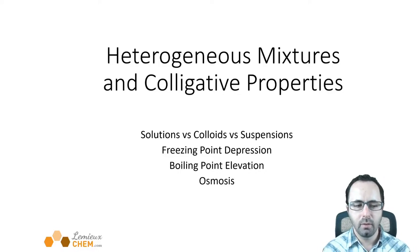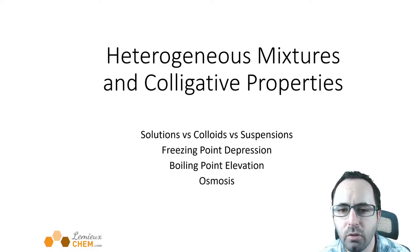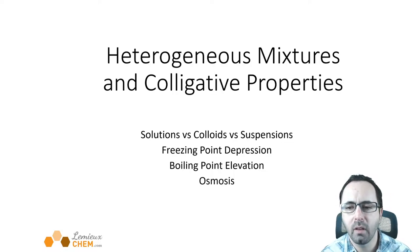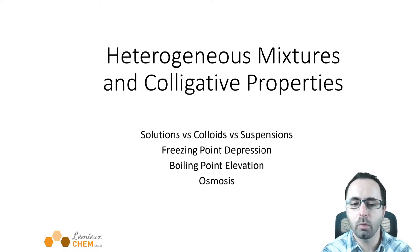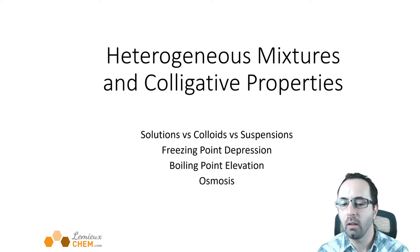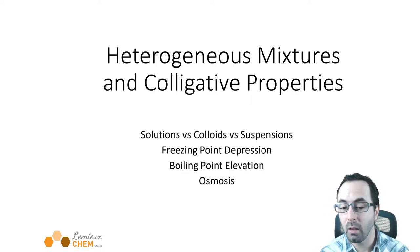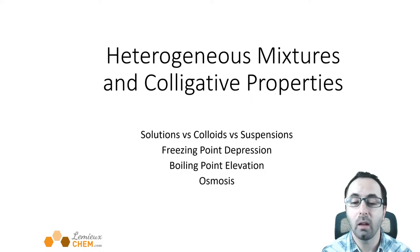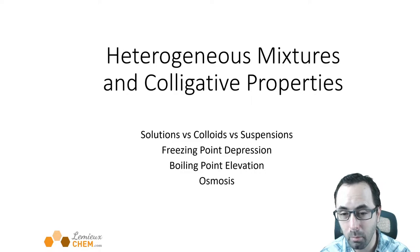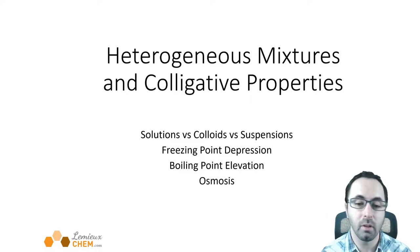Hi CHEM101 students and welcome back to the last lecture in the solutions chapter. This one is going to be about heterogeneous mixtures and colligative properties. We'll start by talking about the differences between solutions, which are homogeneous mixtures, and other types of heterogeneous mixtures. We'll talk about freezing point depression, boiling point elevation, and osmosis. These together are referred to as colligative properties — properties that depend on the amount of dissolved solute.